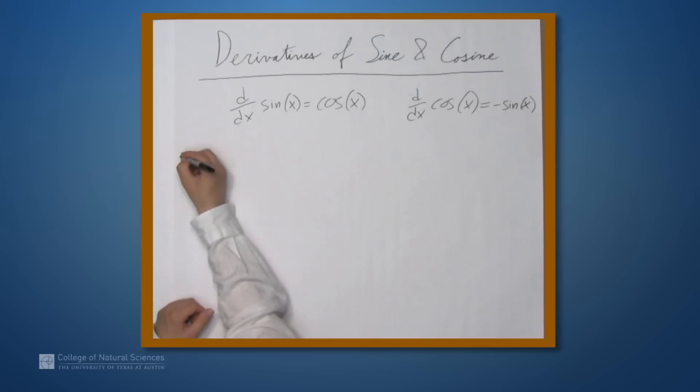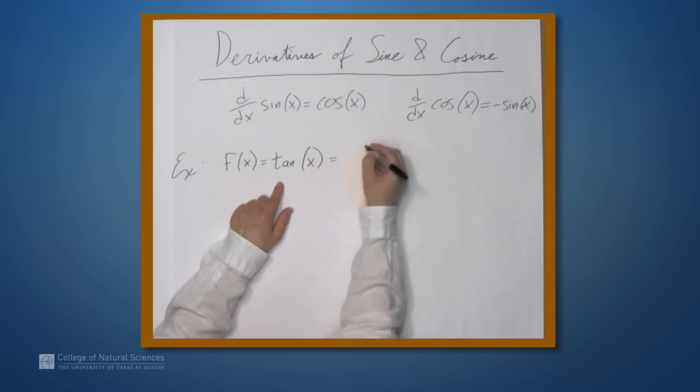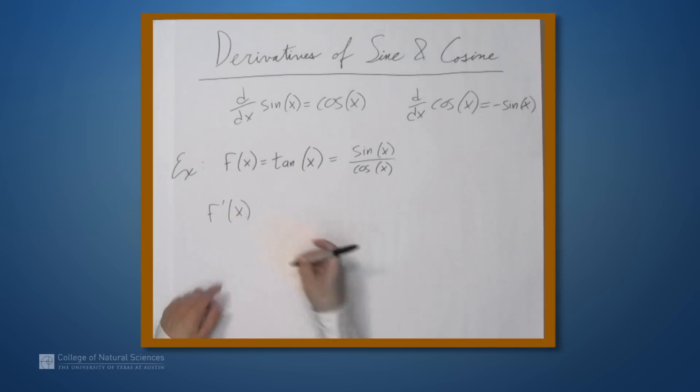So let's apply this to a few examples. First, let's use it to find the derivative of tangent. So tangent is equal to sine x over cosine x. So to find the derivative, we can use these two derivatives up here and combine it with the quotient rule.